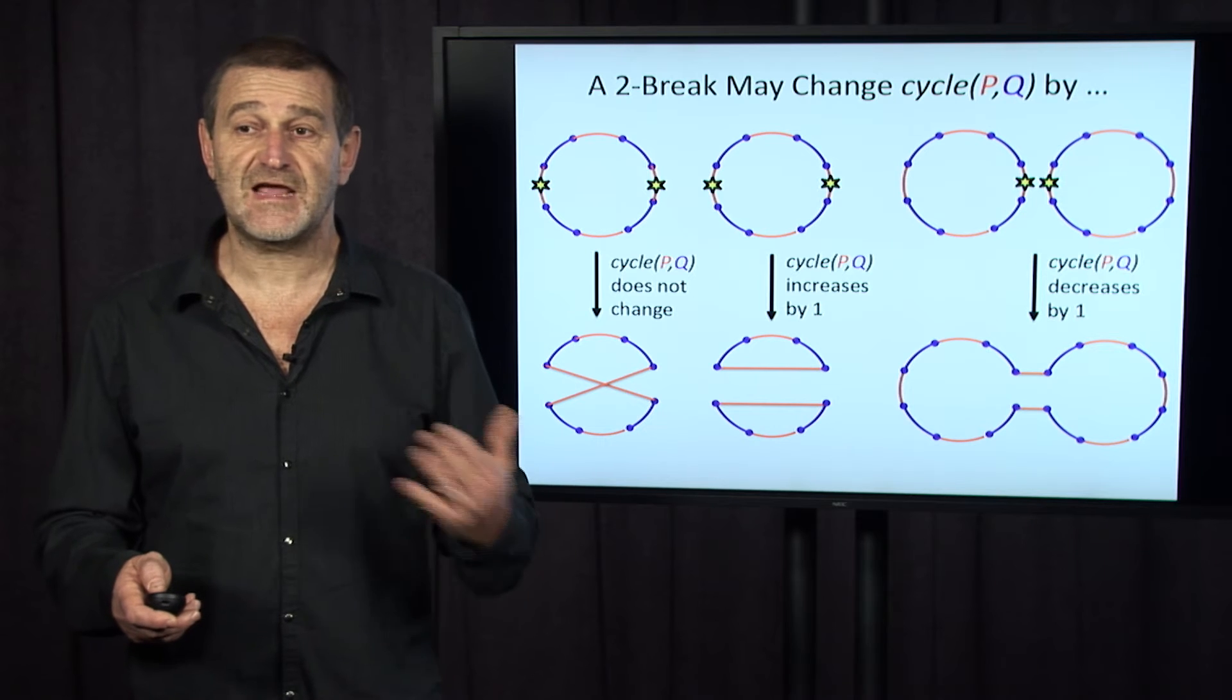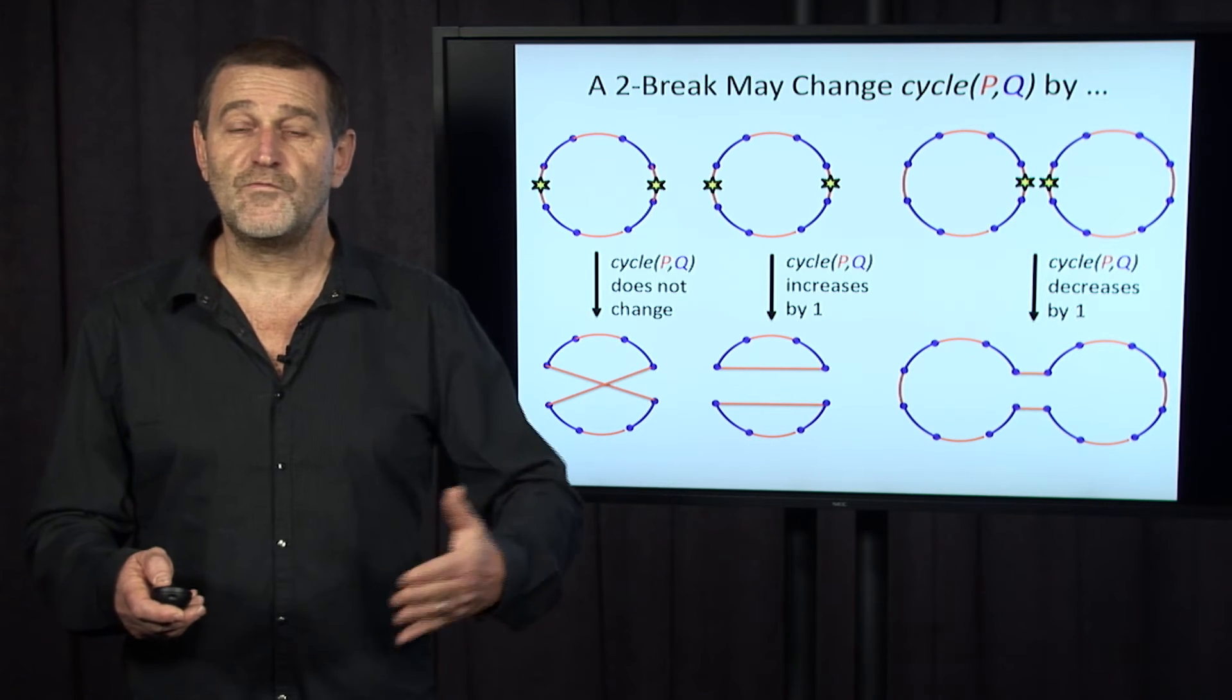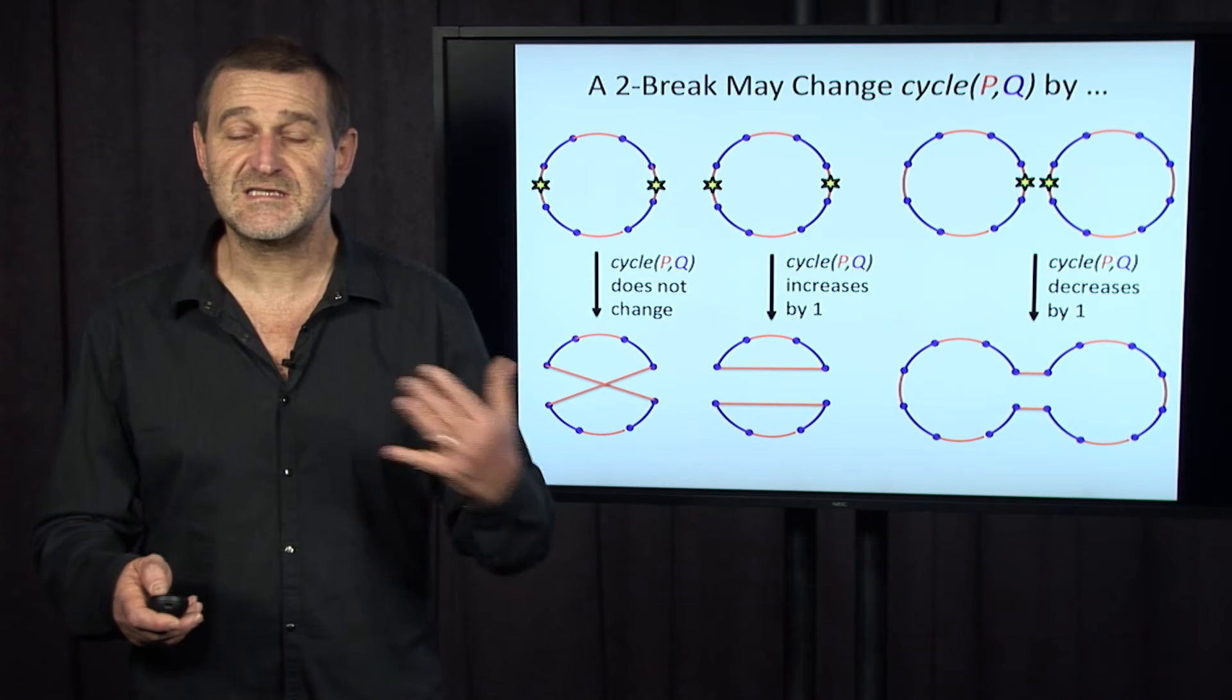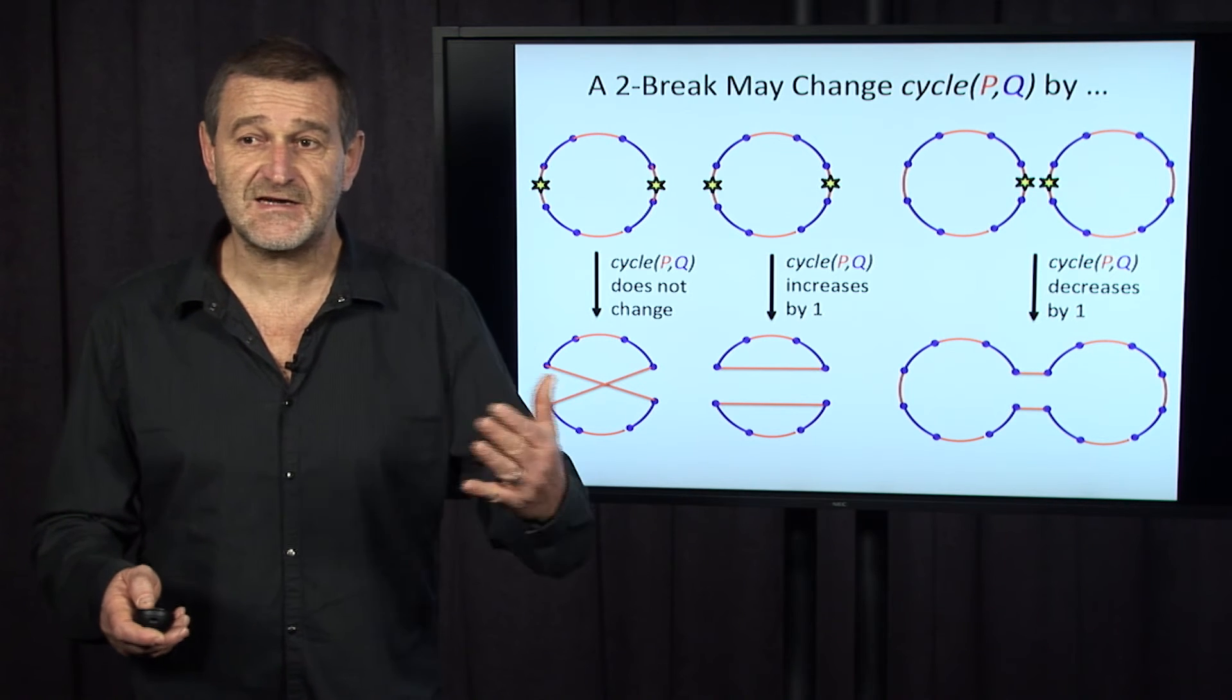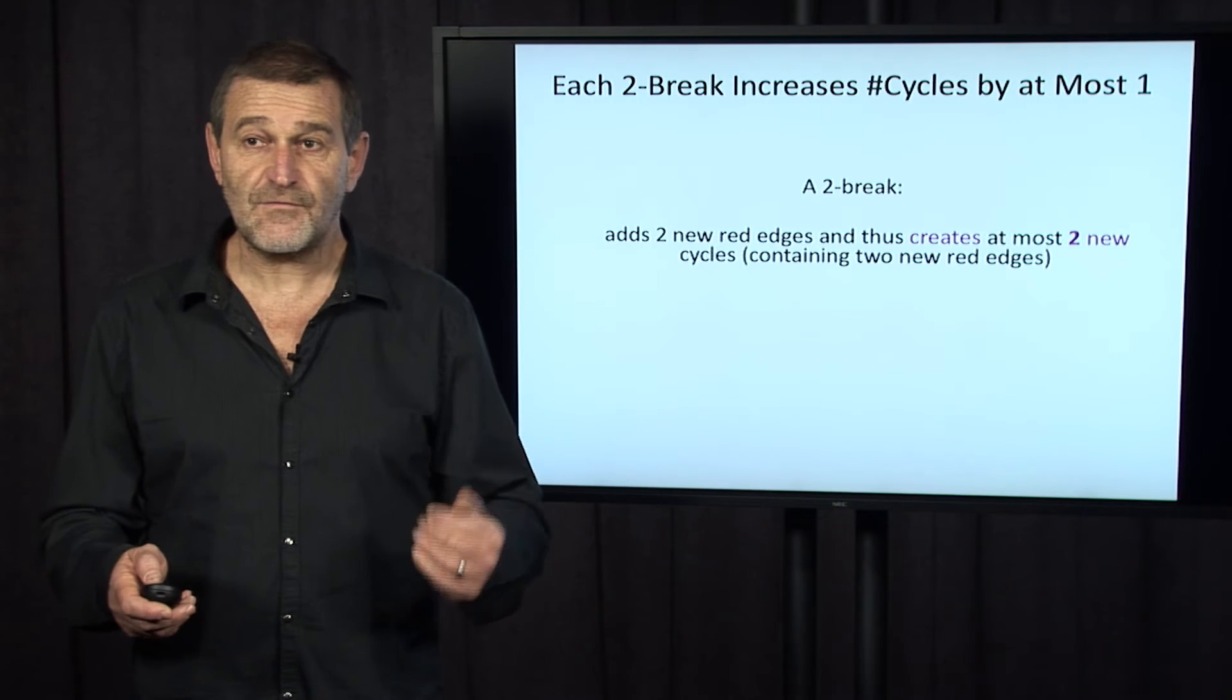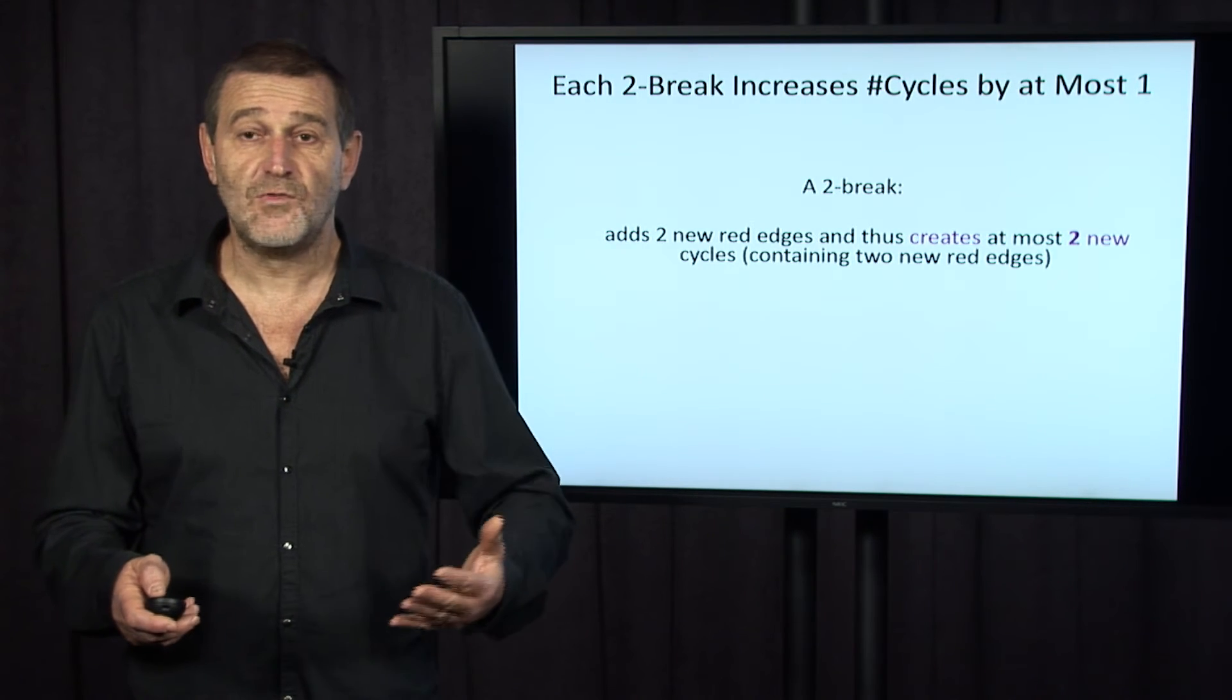And now let's consider the case when two removed red edges belong to two different cycles. You can see that in this case, it doesn't matter which two red edges replace these removed red edges. The cycle number doesn't change. Actually, the cycle number decreases by one in this case. And therefore, each two-break increases the number of cycles by at most one.